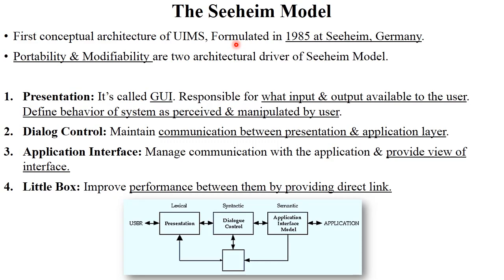The first model in User Interface Management System is the Seeheim Model. It is the first conceptual architecture of UIMS, formulated in 1985 at Seeheim, Germany. It provides mainly two types of features: Portability and Modifiability. The structure of the Seeheim Model has three components: Presentation, Dialog Control, and Application Interface Model. All those components are linked with each other, with the user on one side and the application or system on the other.